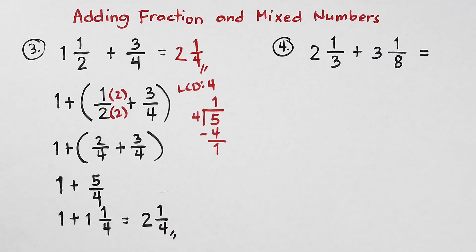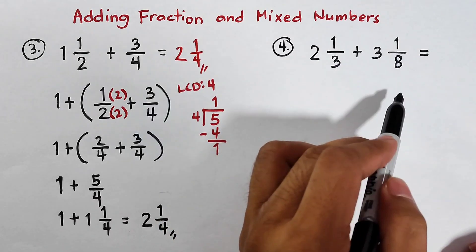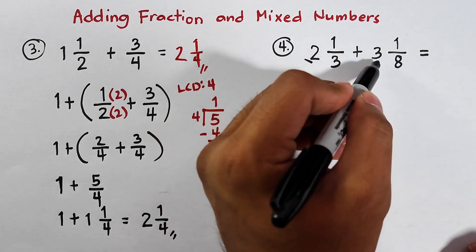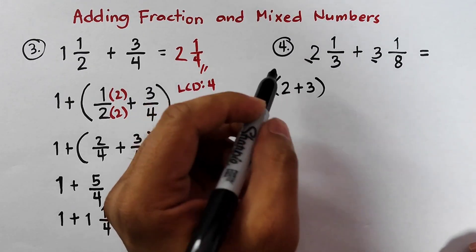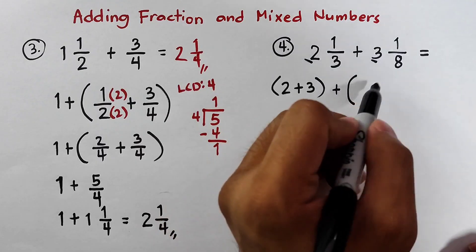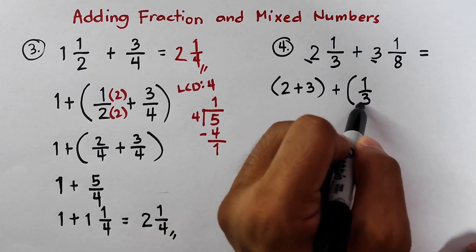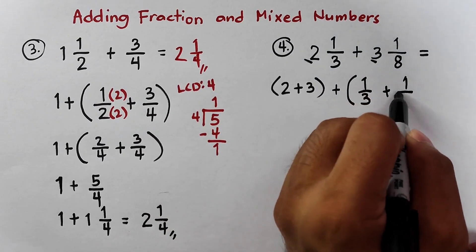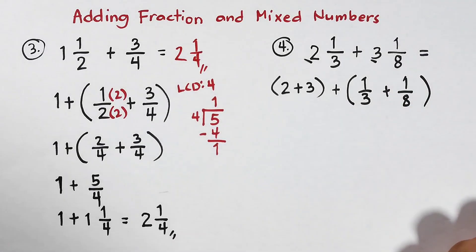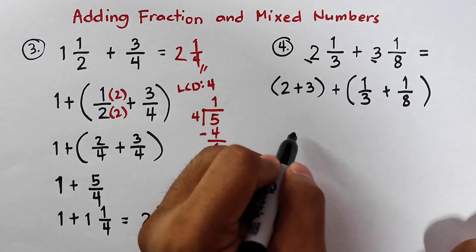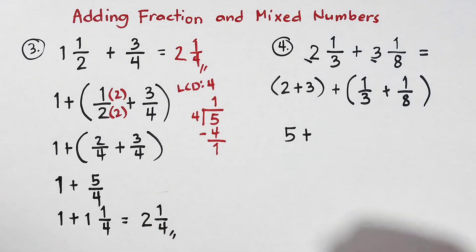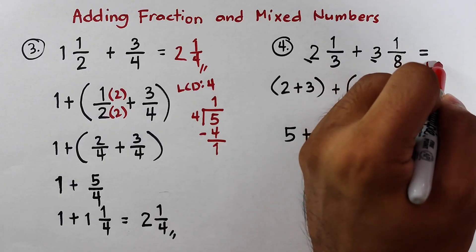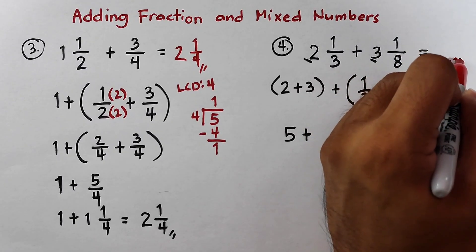Last example — number 4: 2 and 1 third plus 3 and 1 over 8. Let's add them separately: 2 plus 3, then add the fractions 1 over 3 plus 1 over 8. The whole numbers give 5. Now we need the LCD between 3 and 8. The LCD is 24.